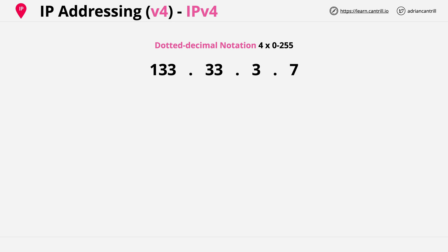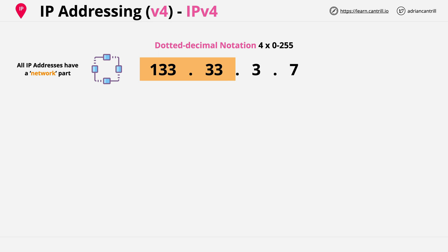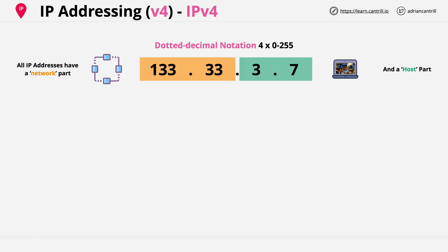All IP addresses are actually formed of two different parts. There's the network part, which states which IP network this IP address belongs to, and then the host part, which represents hosts on that network. In this example the network is 133.33, and then the hosts on that network can use the remaining part of the IP. In this case 3.7 is one device on that network — a laptop. A really important part of understanding how your data gets from your location to a remote network is: given two IP addresses, how do you tell if they're on the same IP network or different IP networks?